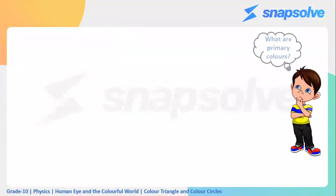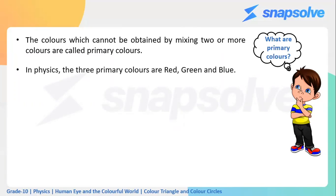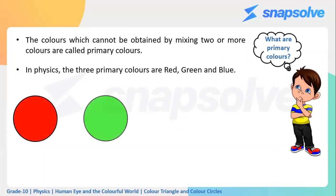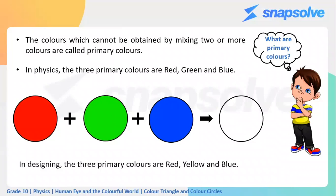What are primary colors? Primary colors are those colors that we cannot obtain by mixing two or more colors. In physics, there are three primary colors: red, green, and blue. When we add these three primary colors, we get white. We will focus on the colors of light.